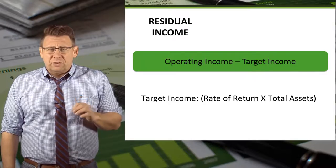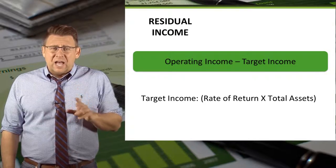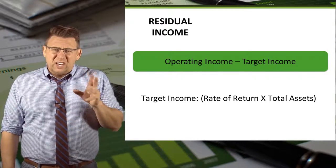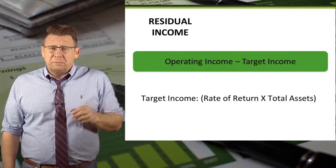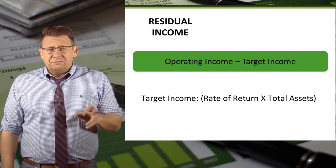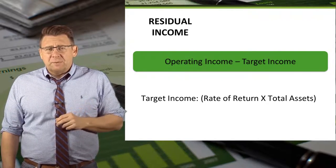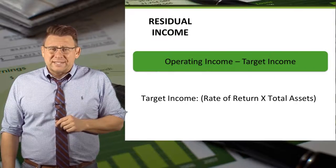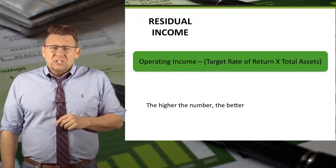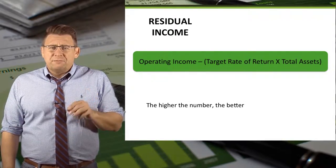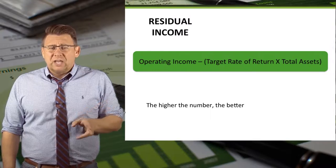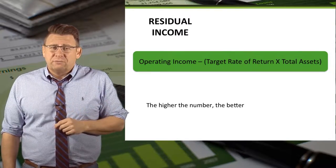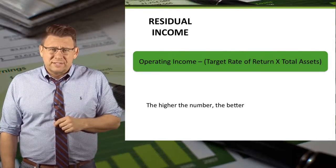Residual income is calculated as operating income minus a target income determined by management. Often the target income is based on return on total assets, so we can expand the formula to be: operating income minus a target rate of return times total assets.